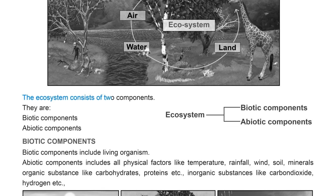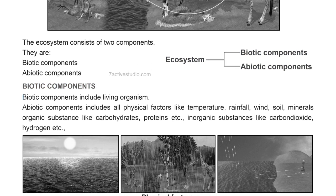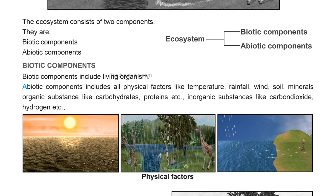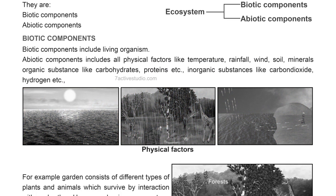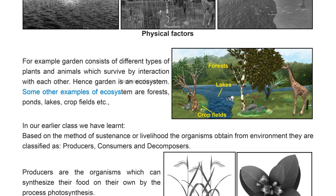An ecosystem consists of two components: biotic components and abiotic components. Biotic components include living organisms. Abiotic components include all physical factors like temperature, rainfall, wind, soil, minerals, organic substances such as carbohydrates and proteins, and inorganic substances such as carbon dioxide and hydrogen. For example, a garden consisting of different types of plants and animals is an ecosystem. Other examples include forests, ponds, lakes, and crop fields.